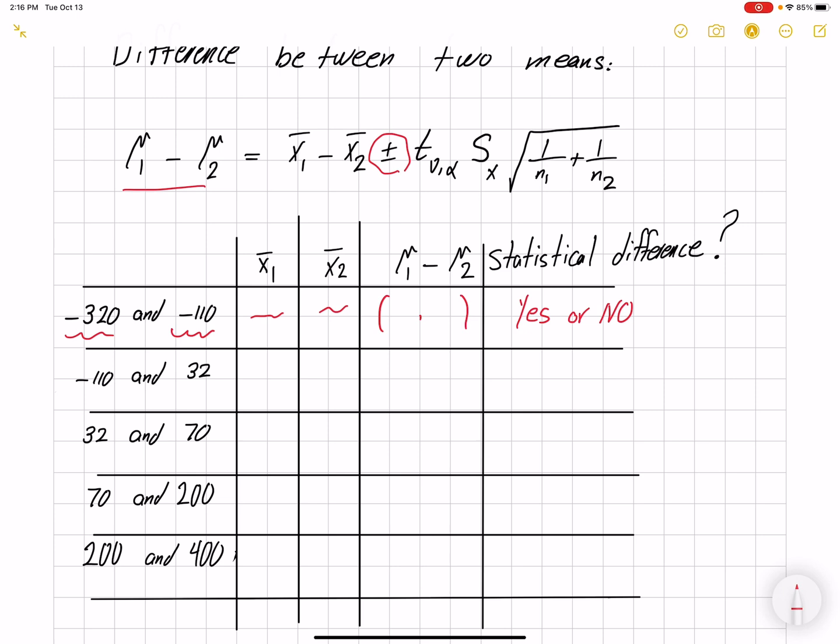If it doesn't include zero, there is a statistical difference. So I'm expecting a similar table in your lab report detailing whether your results show any statistical difference or not.